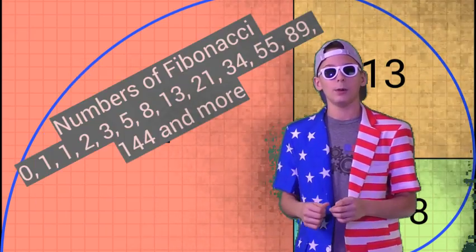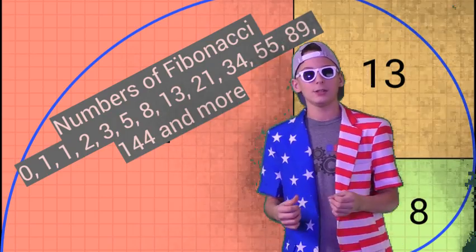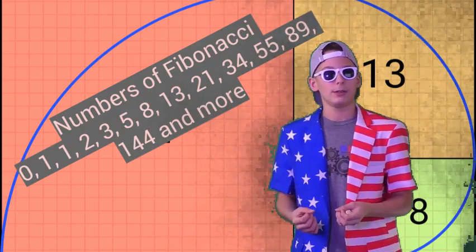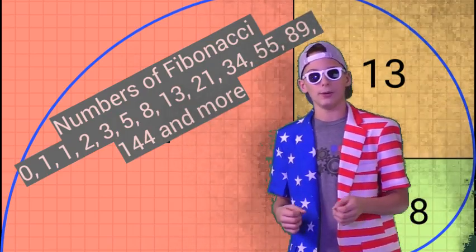The numbers of Fibonacci are 0, 1, 1, 2, 3, 5, 8, 13, 21, 34, 55, 89, 144, and more.